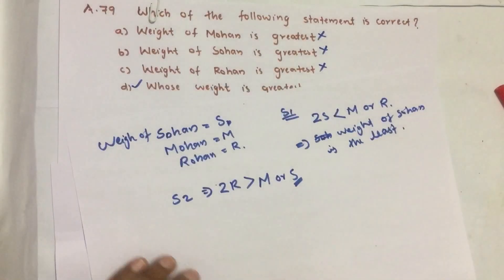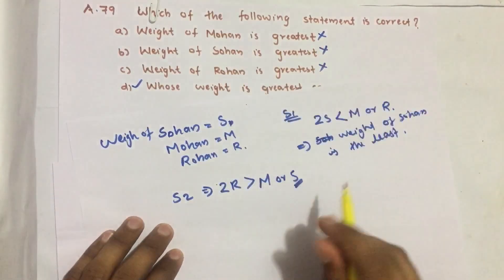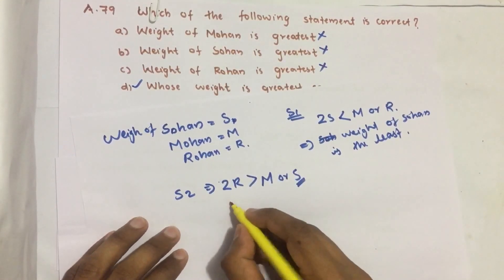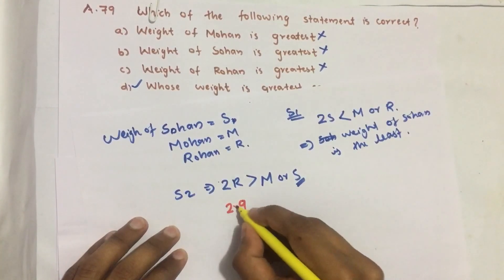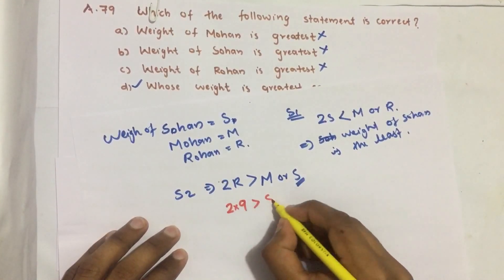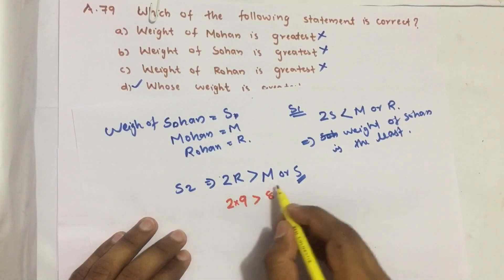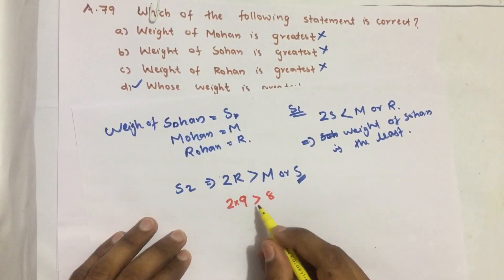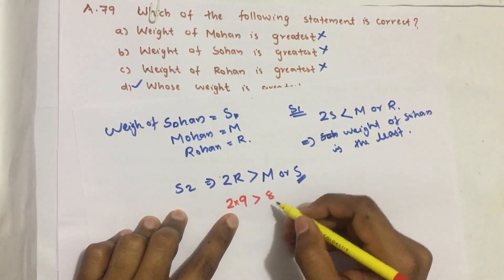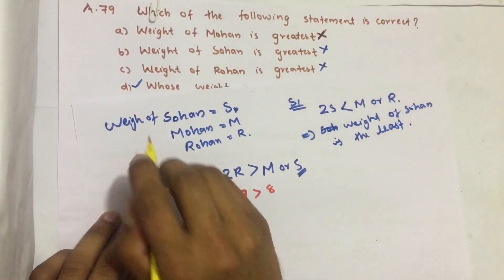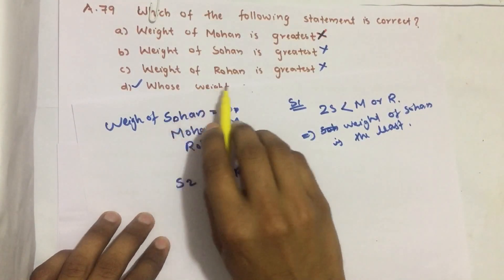Question number 79: which of the following statements is correct? Is the weight of Mohan the greatest? Suppose I give weight of Rohan = 9 and weight of Mohan = 8. Then 2 × 9 = 18, and 18 is greater than 8 — satisfying Statement 2. This proves the weight of Rohan can be more than the weight of Mohan, so option A is wrong.